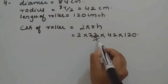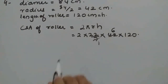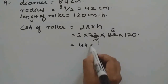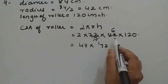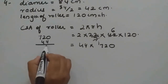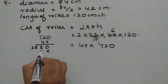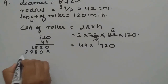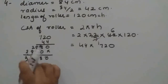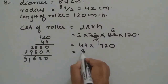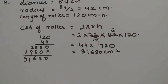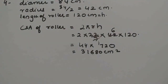From 7 we can cancel 7. Then it will give 44 into 12, that is 720. So 720 multiplied by 44. We get CSA of roller as 31,680 cm². This is the CSA of the roller in 1 revolution.